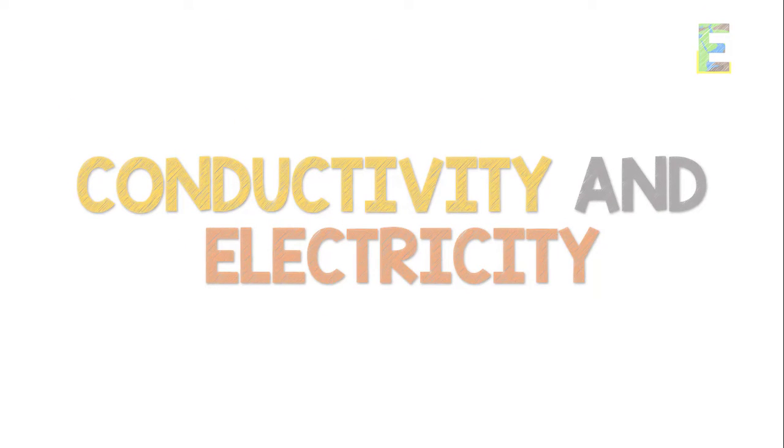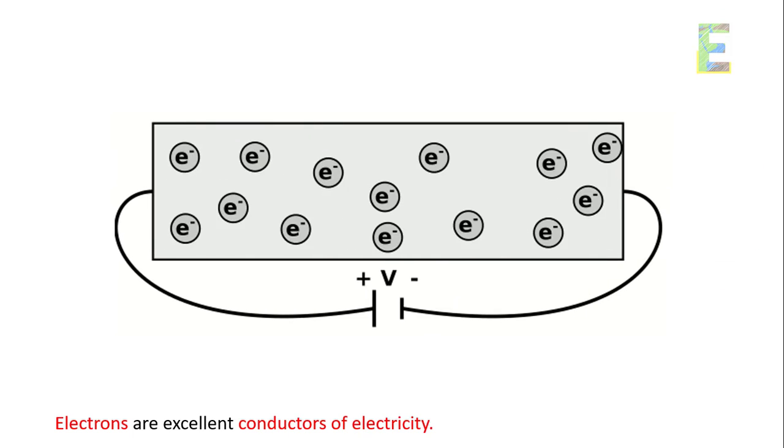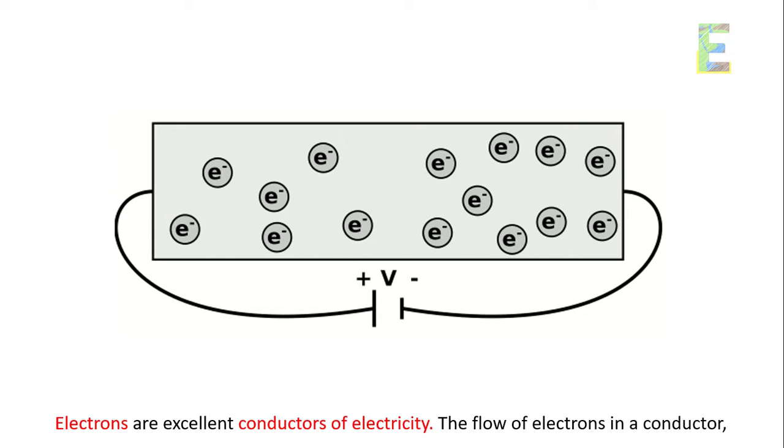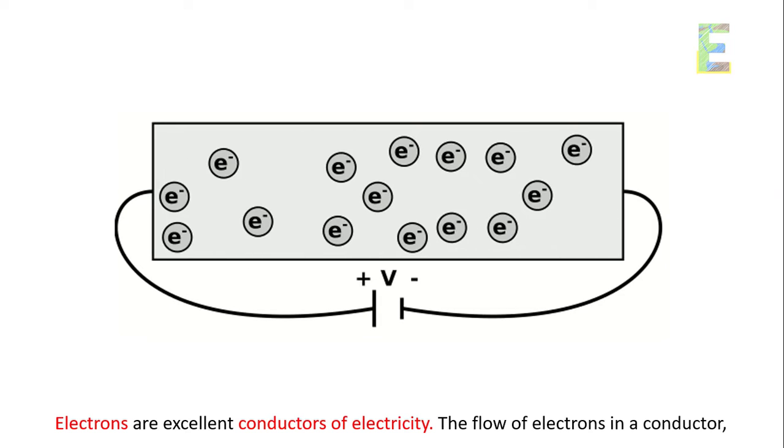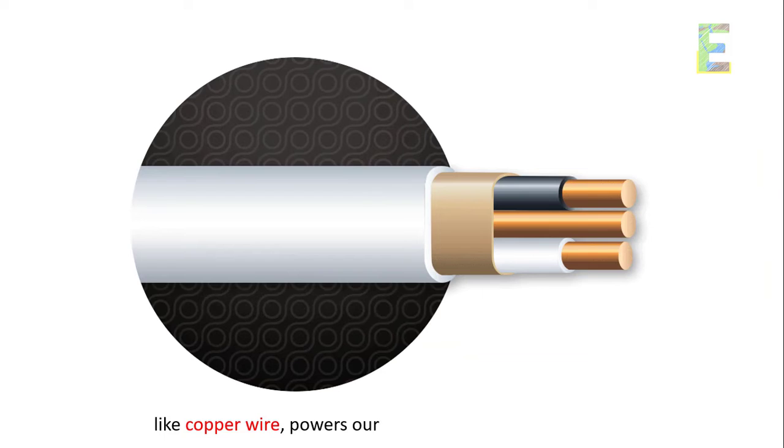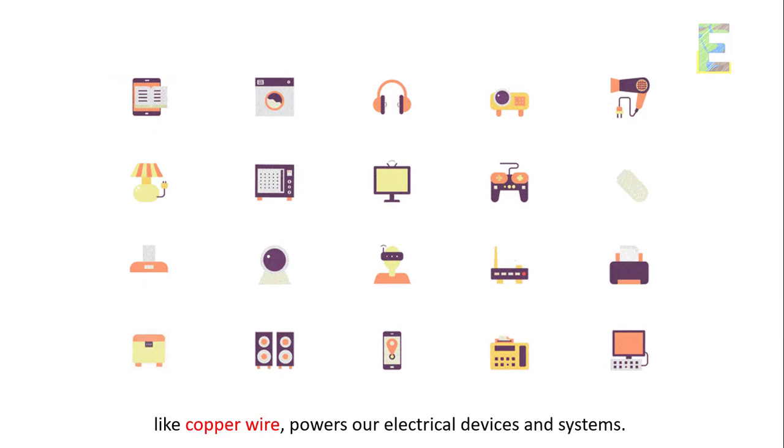Conductivity and electricity. Electrons are excellent conductors of electricity. The flow of electrons in a conductor, like copper wire, powers our electrical devices and systems.